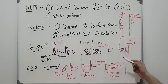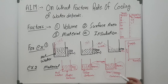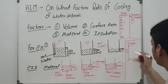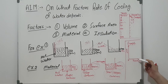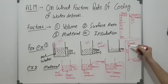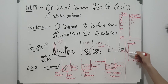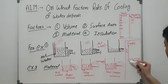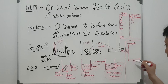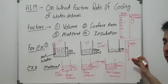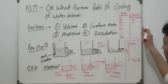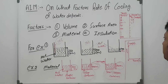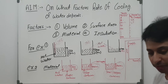After taking the readings, children, you have to plot a graph. Along the y-axis, take the temperature in degrees Celsius, and along the x-axis, the time. Then plot the graph according to the values recorded in the table.